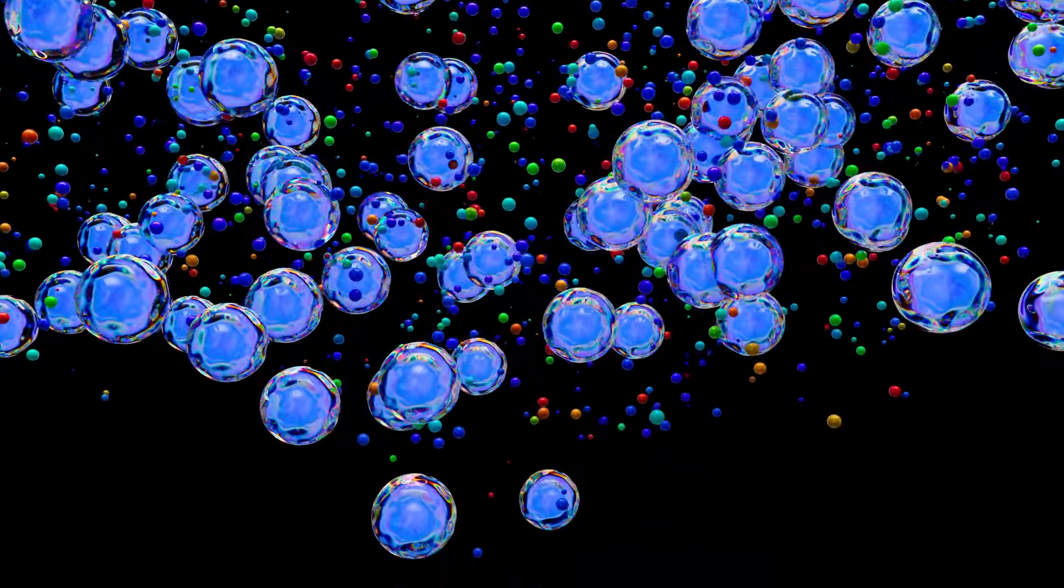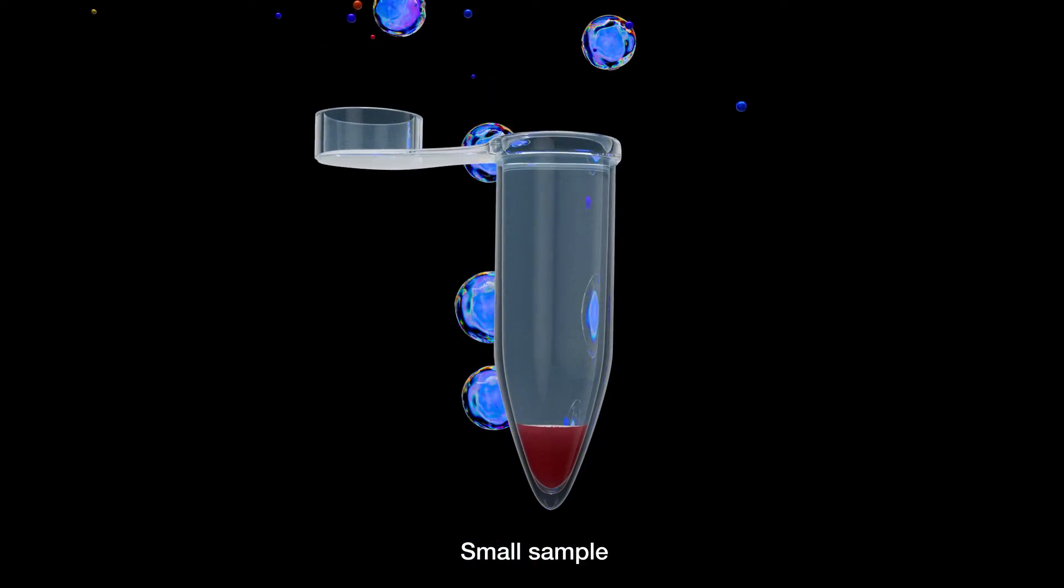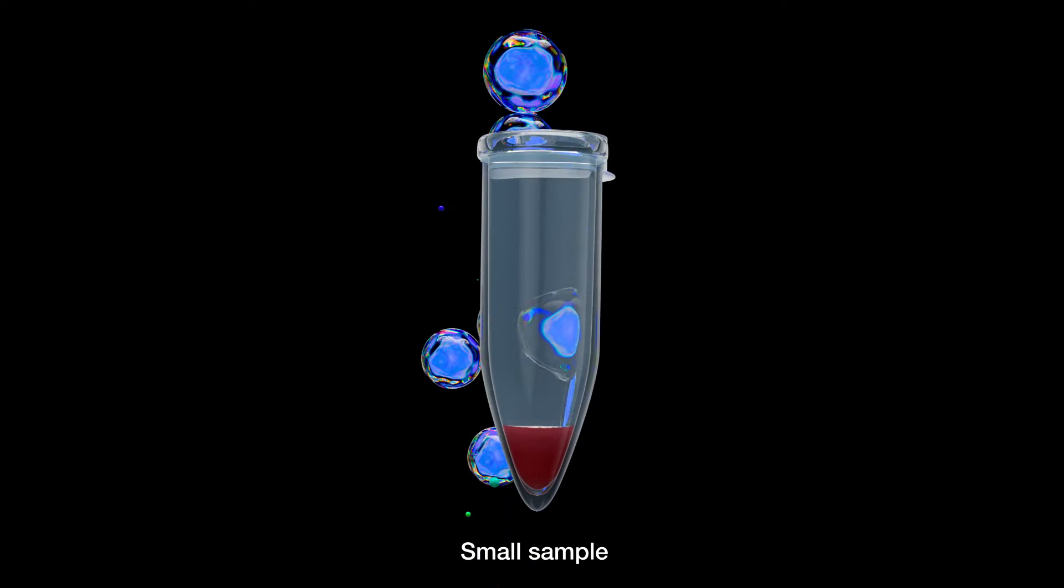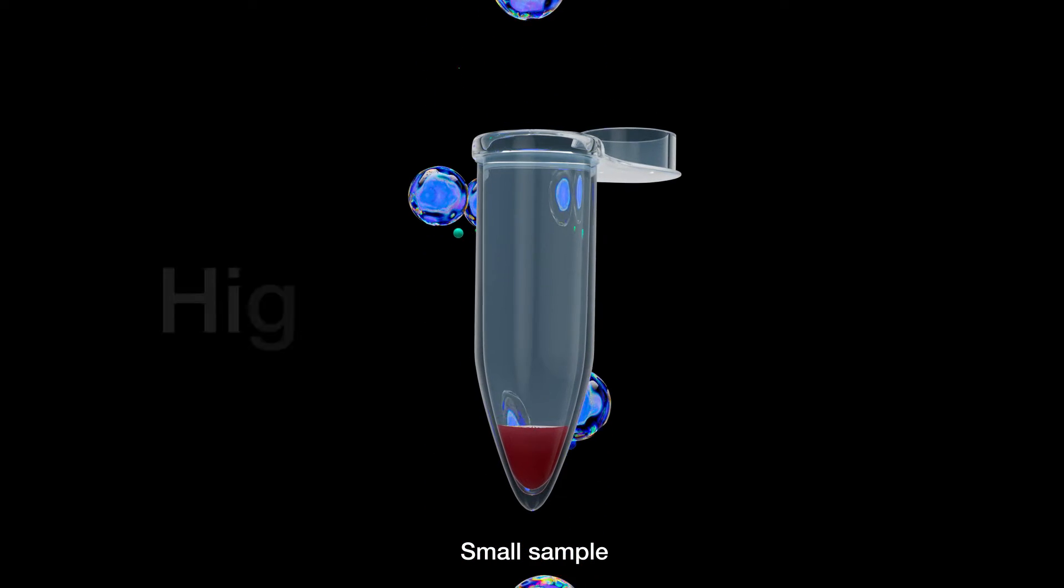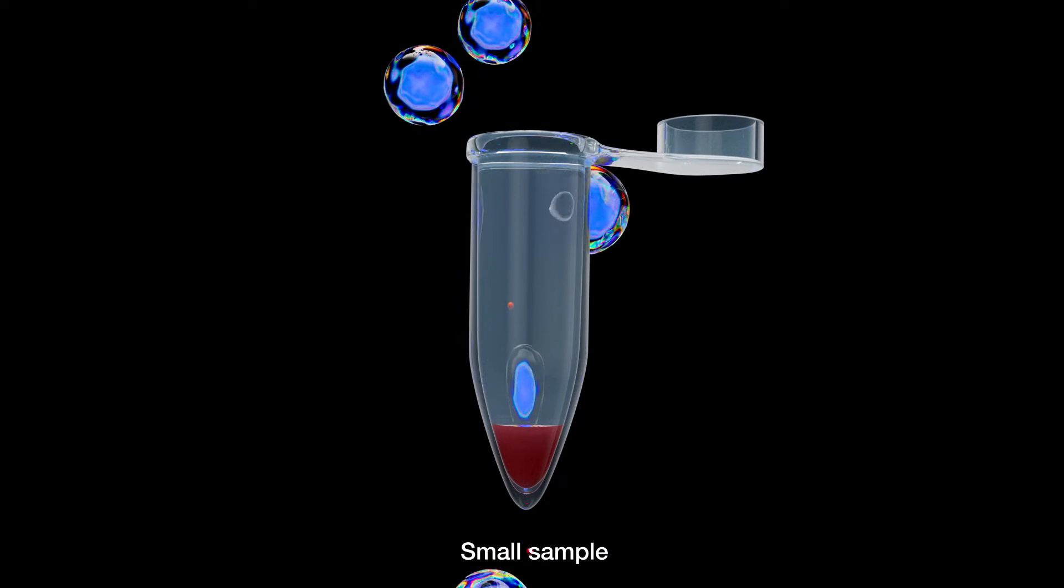For example, you receive a small sample of material that is hard to obtain. How do you make it go a long way? Spectral flow cytometry enables you to get high dimensional data, even from precious samples that are limited in size.